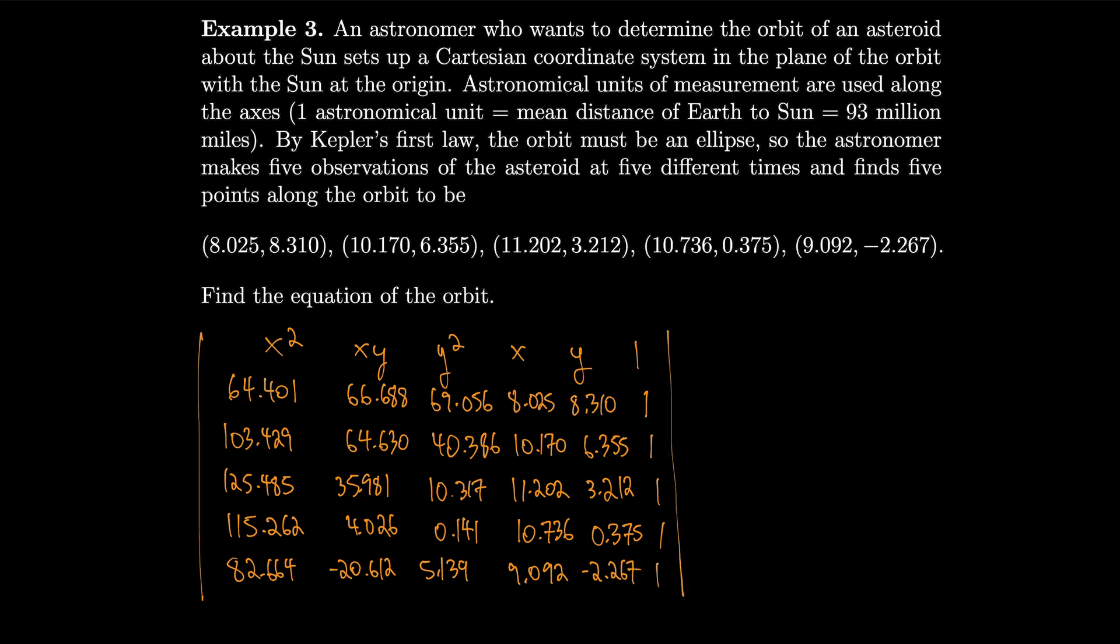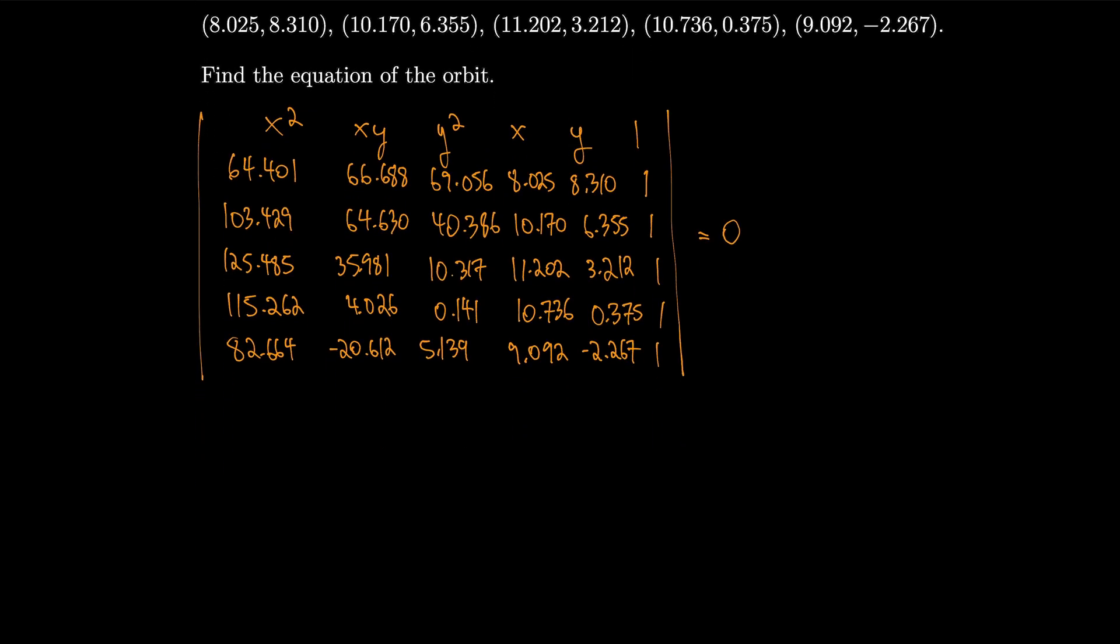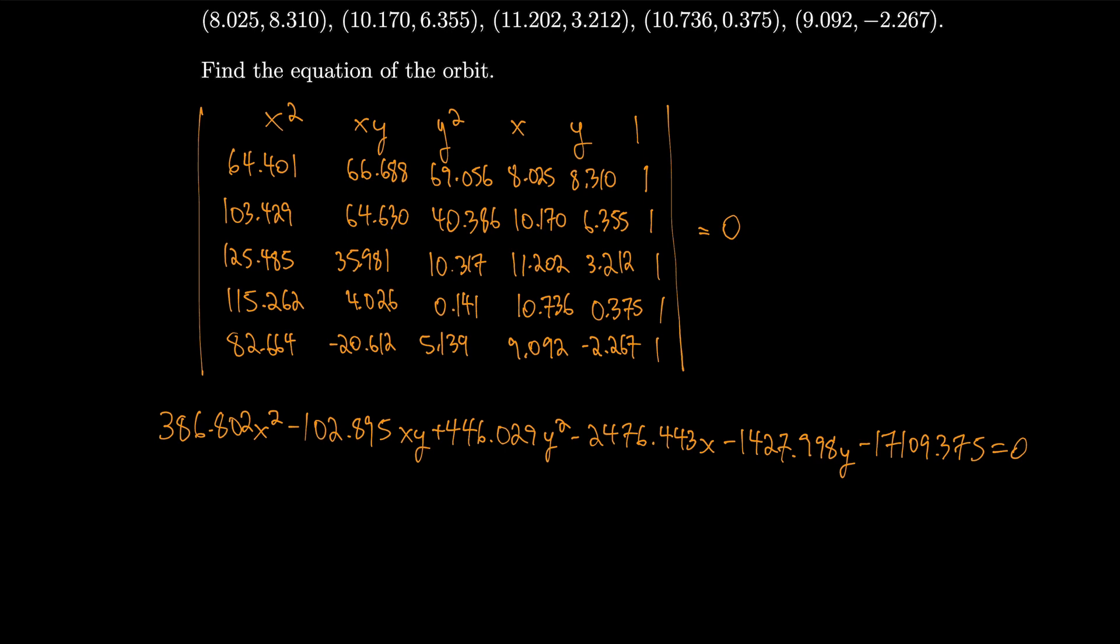We'll take that determinant, set it equal to 0. I am not going to show the work. I just used a calculator to do this determinant, computer algebra system, and got 386.802 x squared, minus 102.895 xy, plus 446.029 y squared, minus 2476.443 x, minus 1427.998 y, minus 17109.375 equals 0. So that's some sort of conic section that passes through these five points. That's the equation of our orbit.